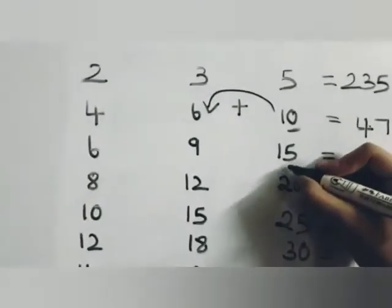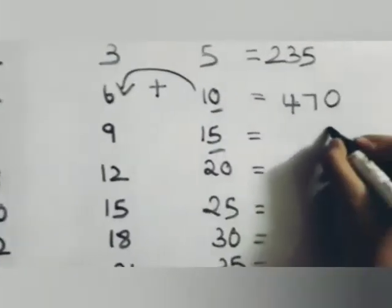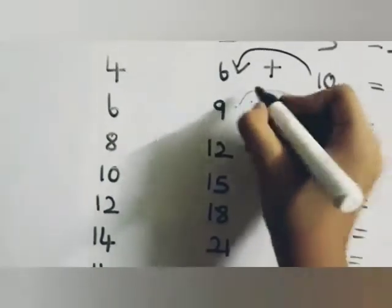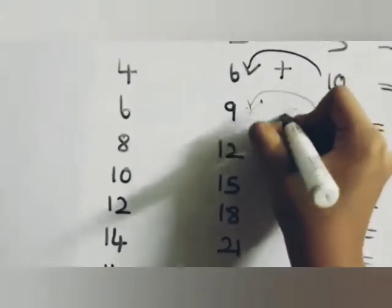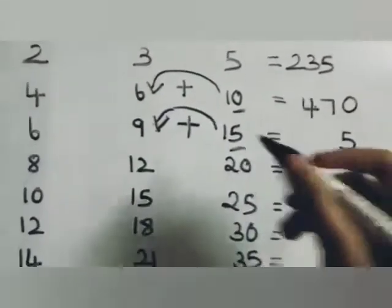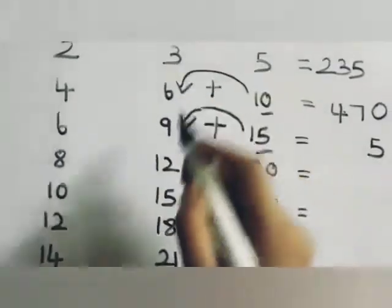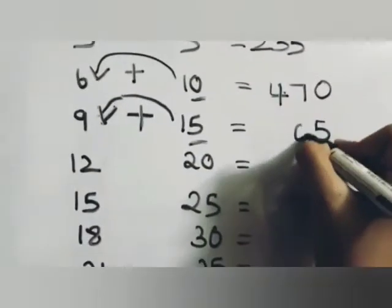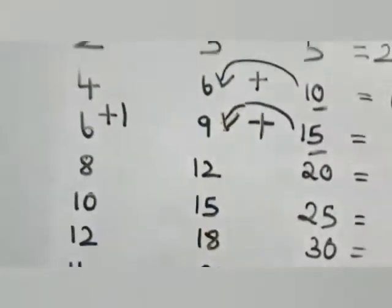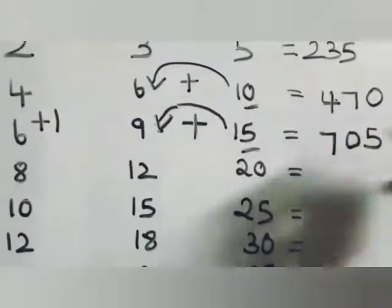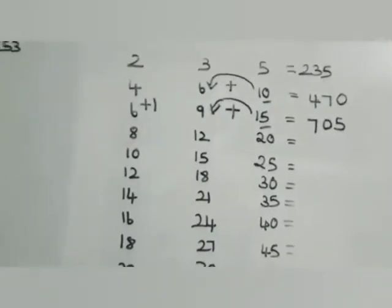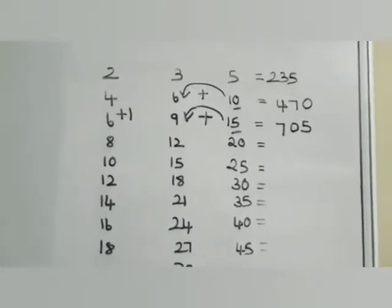The same way here: write five as such and carry over one. Add one to nine — one plus nine will be ten, so write zero here and carry one to six, making it seven. So 235 multiplied by three will be 705.